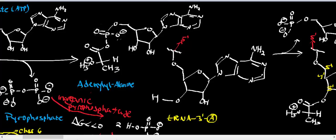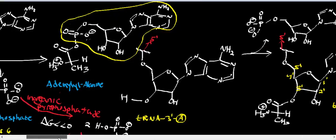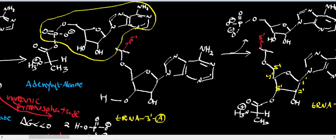The nucleophilic attack of the alanine carboxyl group on the alpha phosphate of ATP produces a molecule called adenylalanine — essentially adenosine monophosphate in a phosphoester bond to alanine. This is what we call activated alanine: we've created a good leaving group for the next substitution reaction.